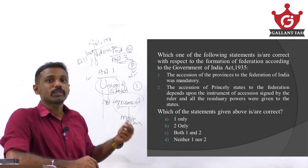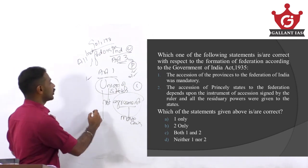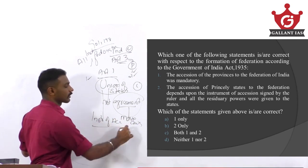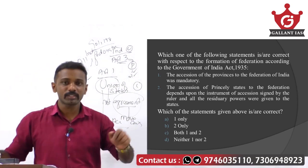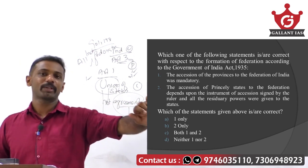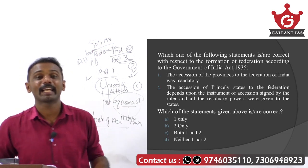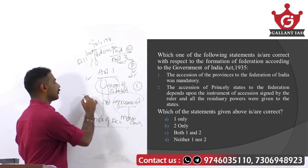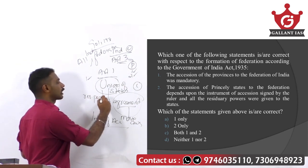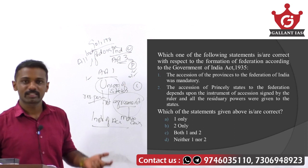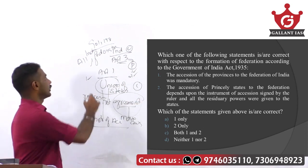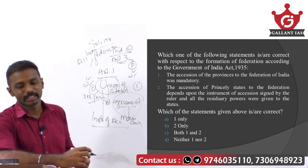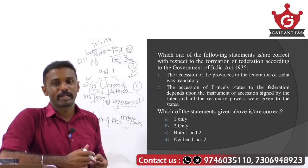The joining to the Federation by princely states was based on the instrument of accession — that is, they would sign an agreement based on specified principles to join the Federation. Also, the residuary powers were allocated to the princely states concerned. So both statements are right, and the answer becomes option C — that is, both 1 and 2.